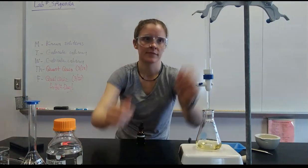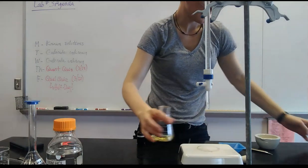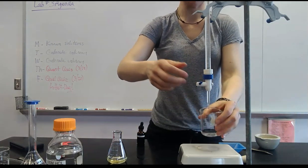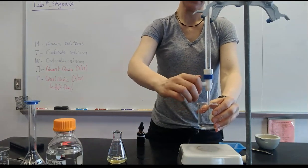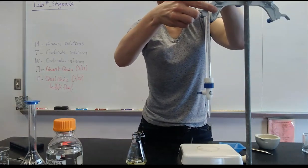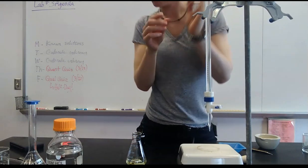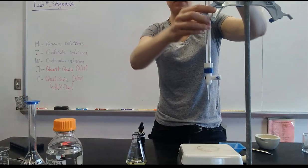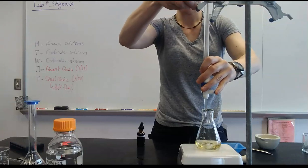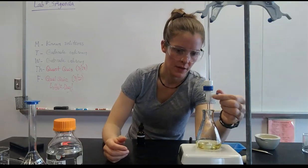I've got sodium hydroxide of unknown concentration in the burette, and before you start you should always let some of the liquid drain out. If there are air bubbles in there they can be released. Now you're ready to go — measure the initial volume of the burette, it's about 1.50 milliliters. I always want the tip of the burette inside the Erlenmeyer flask, and now I'm going to let it rip.